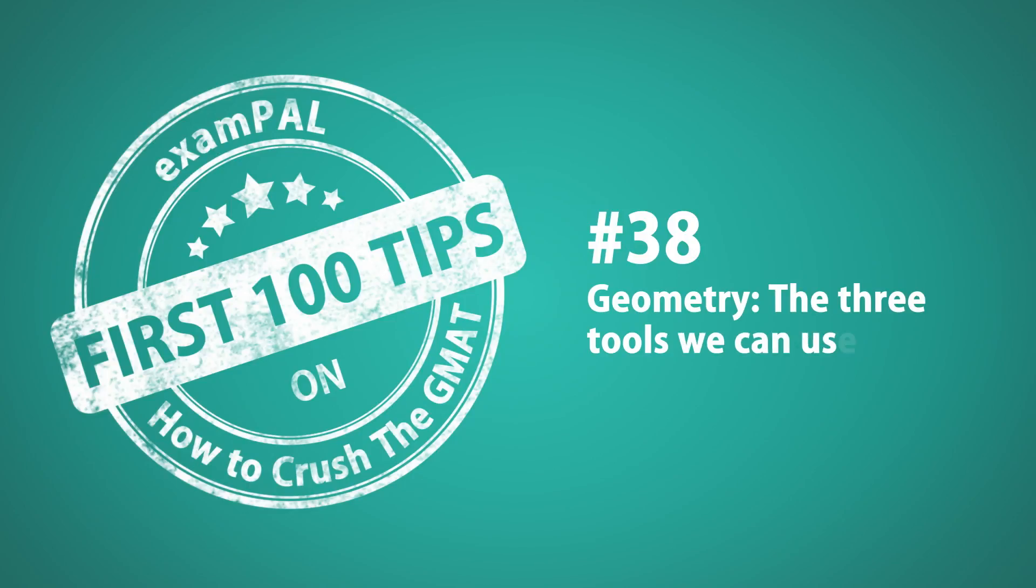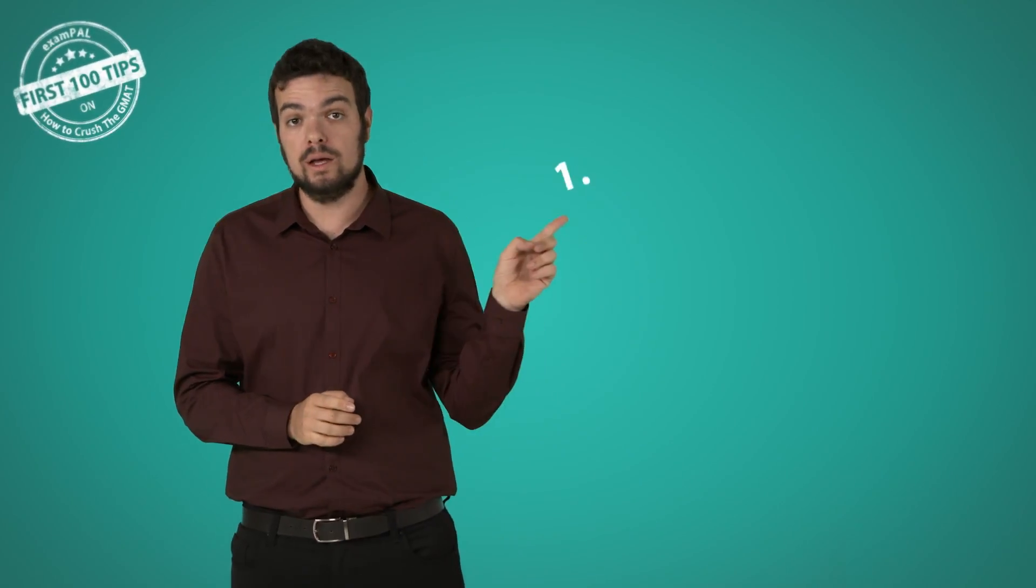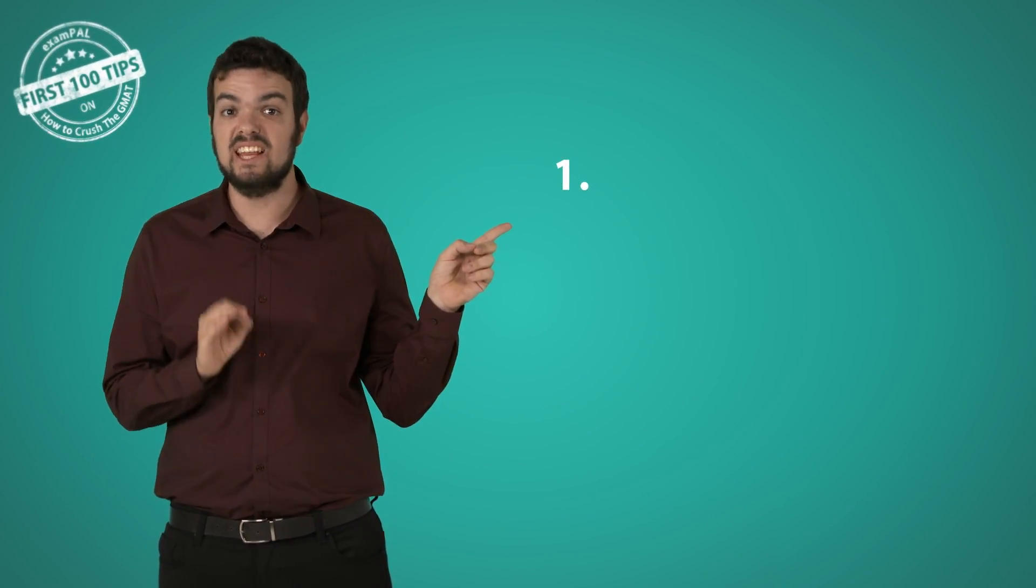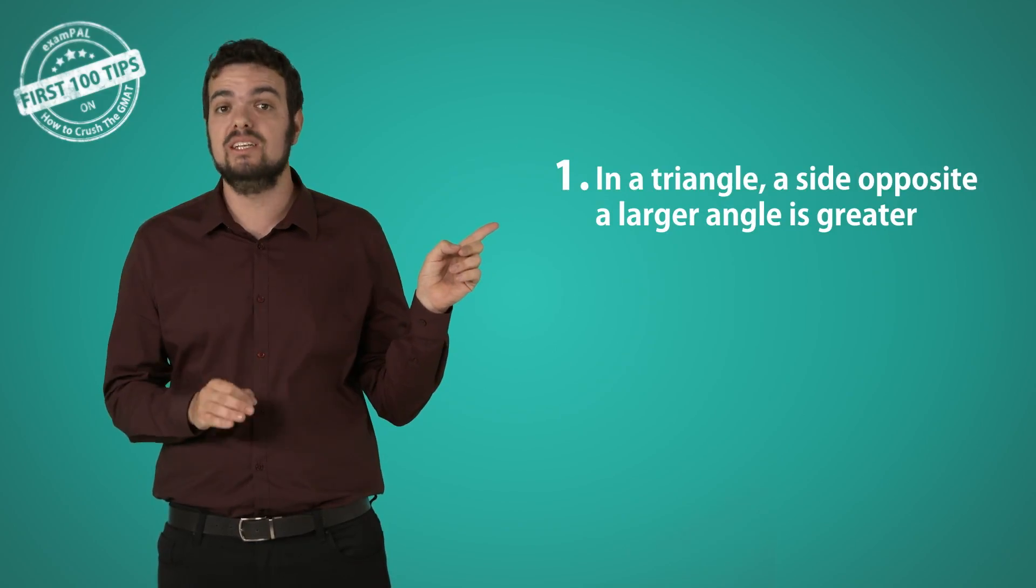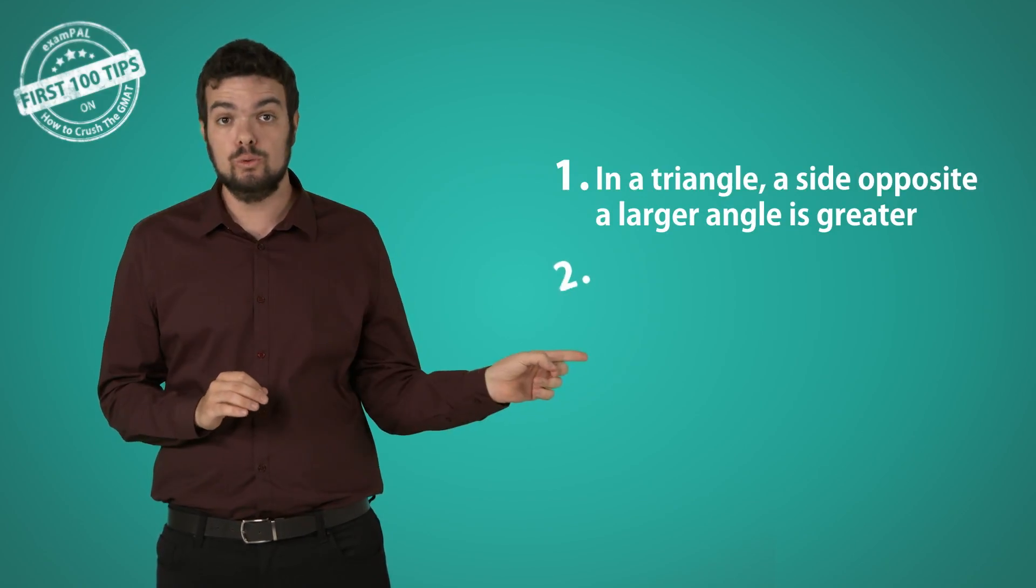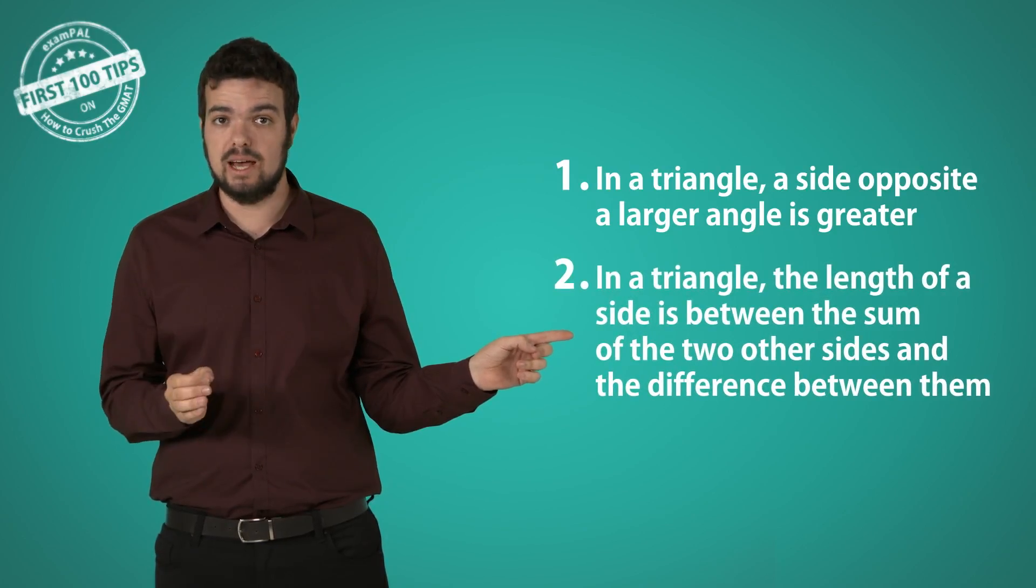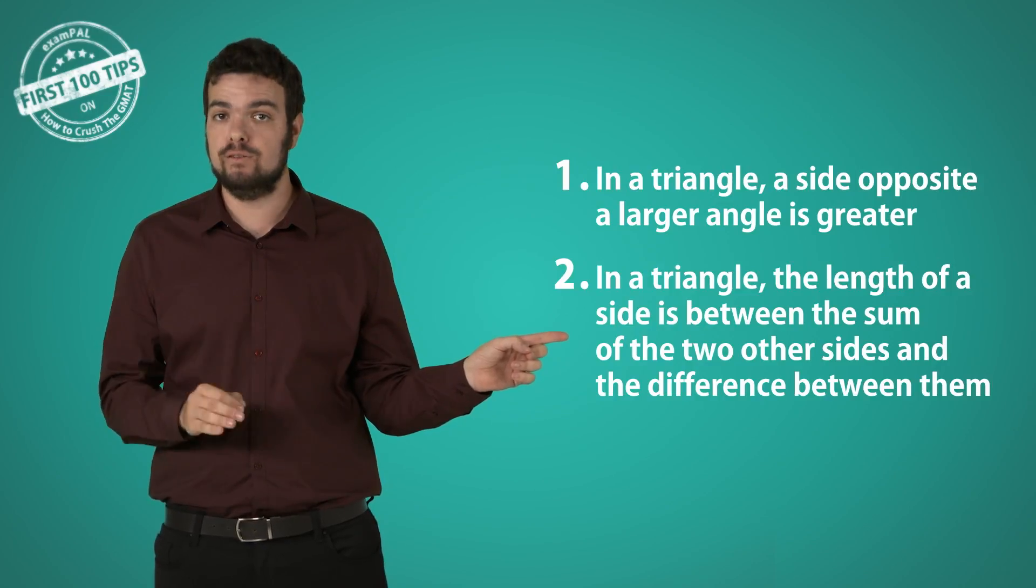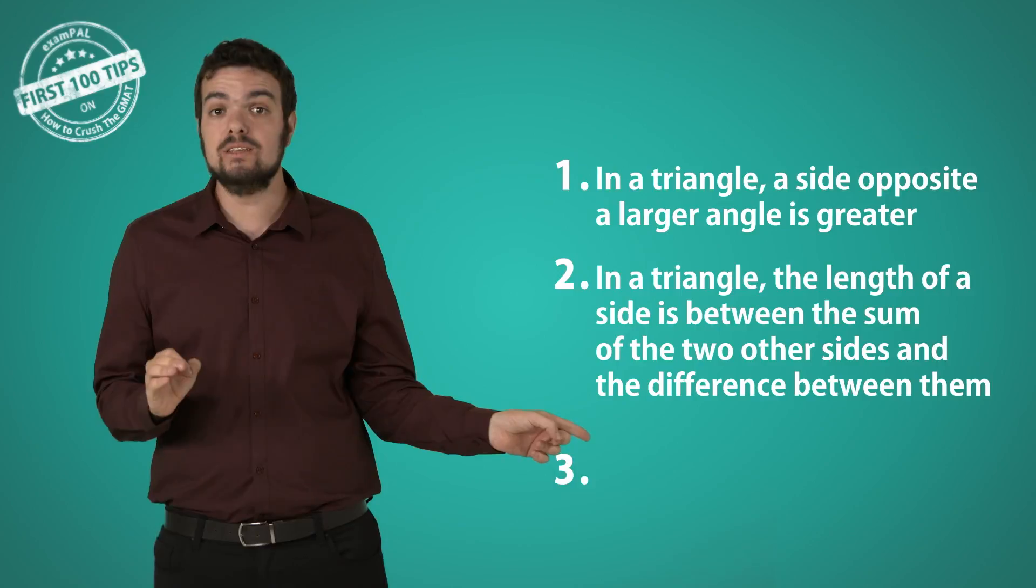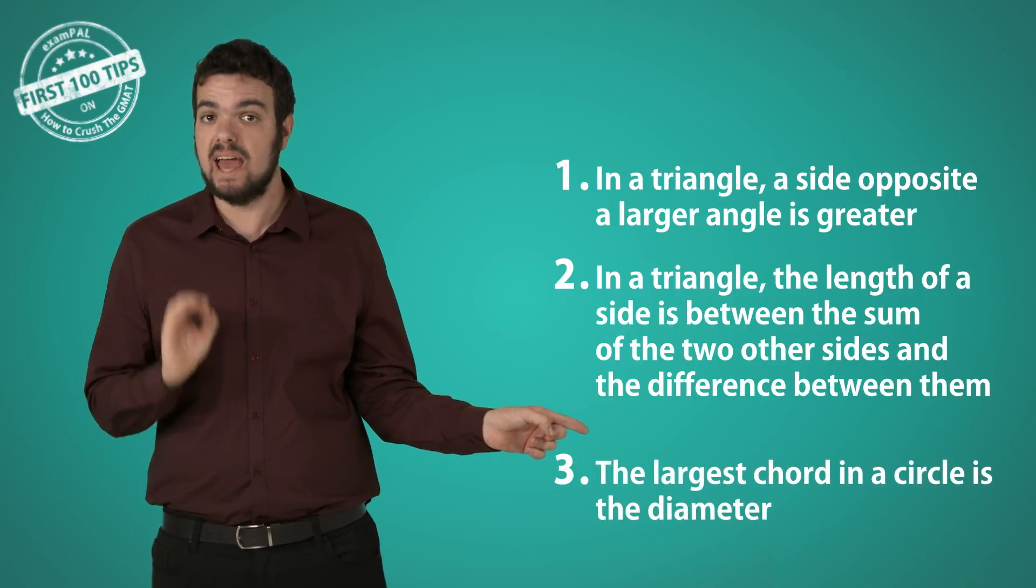The three tools we can use to estimate the length of a line segment. Number 1. Using the rule that in a triangle, a side opposite a larger angle is greater. Two. Using the rule that in a triangle, the length of a side is between the sum of the two other sides, and the difference between them. Three. Using the rule that the largest chord in a circle is the diameter.